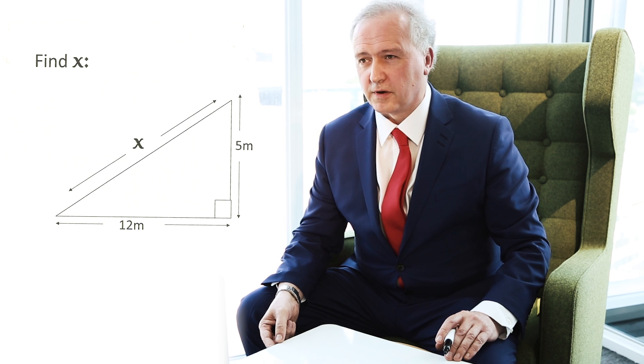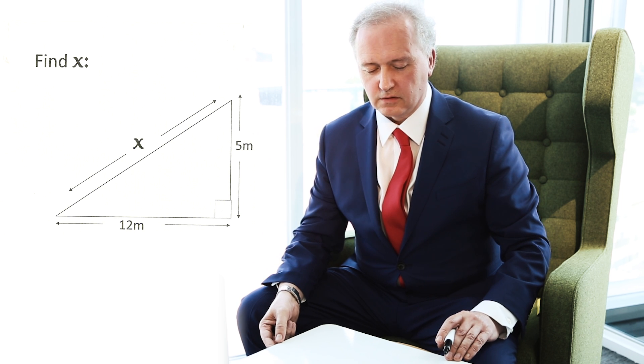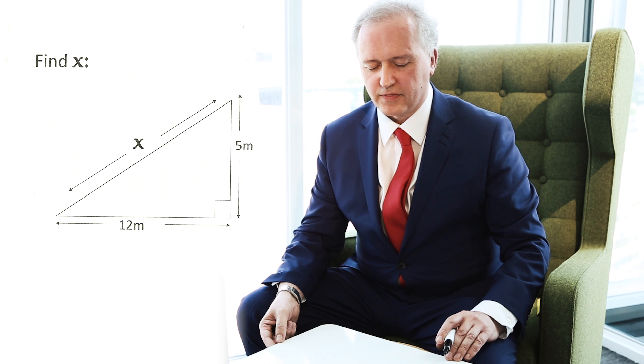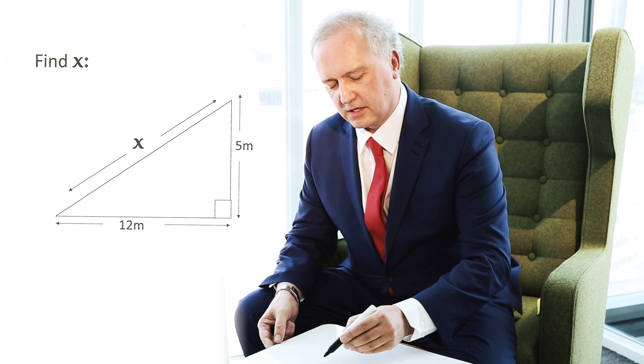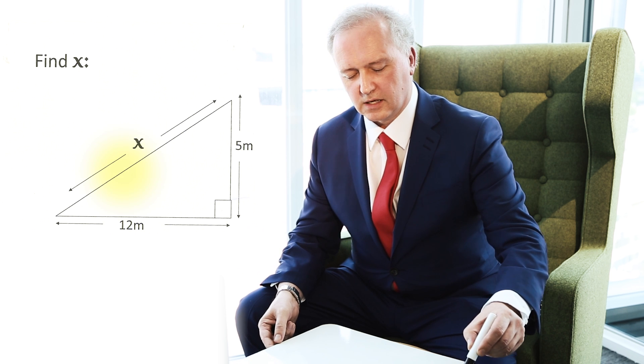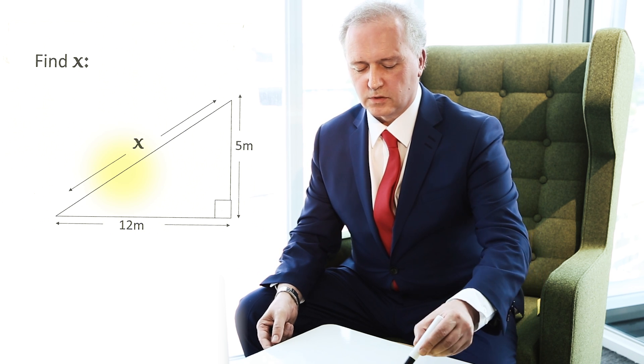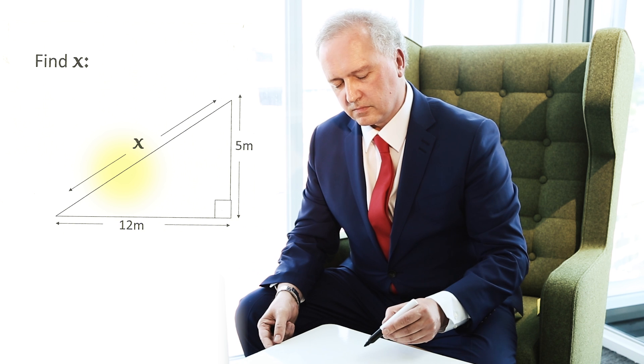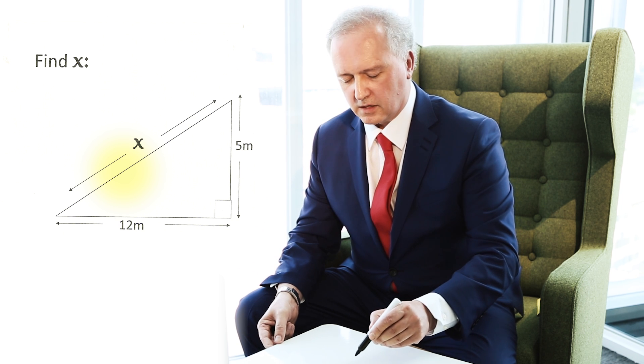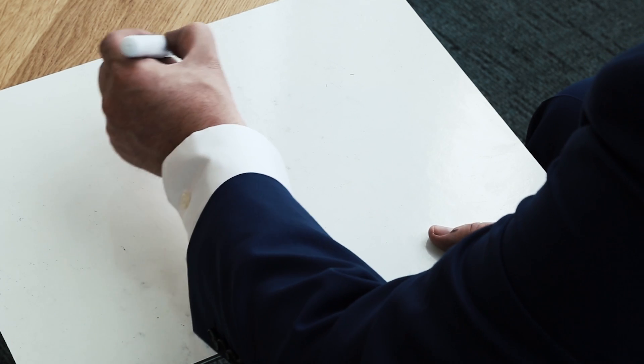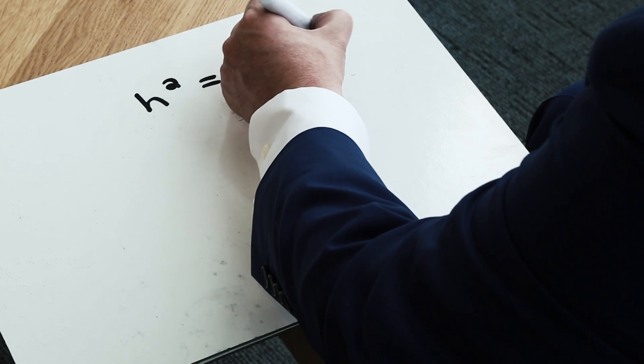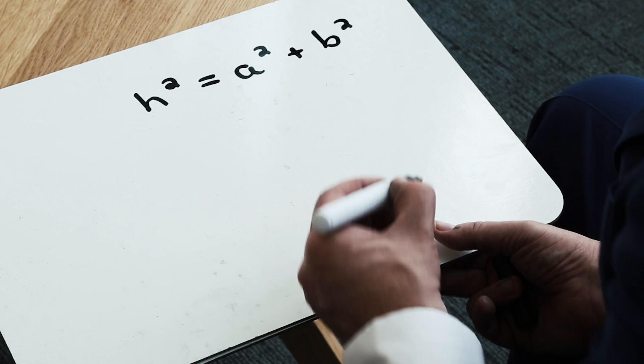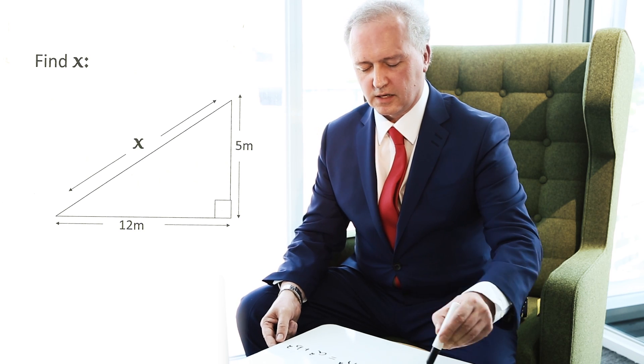To move forward on a Pythagoras' question, what we need to do initially is to state the formula that Pythagoras gave to us many years ago. Pythagoras said effectively that this longer side here, the hypotenuse, which is always opposite the right-angle, that h squared is equal to a squared plus b squared. And a and b are the two sides here and here.